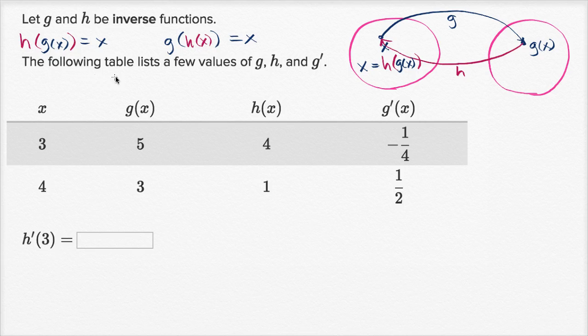Then they give us some information. The following table lists a few values of g, h, and g prime. They want us to evaluate h prime of three. They don't even give us h prime of three. How do we figure it out? They gave us g prime and h and g. How do we figure this out?